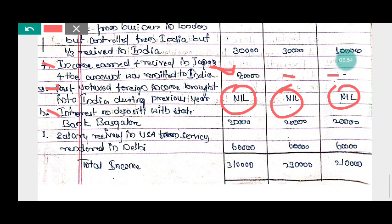Eighth point — interest on deposit with State Bank of India, Bengaluru. This is deposited in a bank in India, so it is Indian income — generated in India and received in India — rupees 20,000, taxable for all three. Ninth point — salary received in USA for services rendered in Delhi. The service is rendered in Delhi, so income is generated in India; therefore rupees 60,000 is taxable for all three statuses.